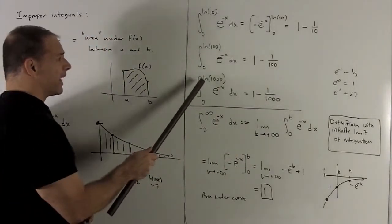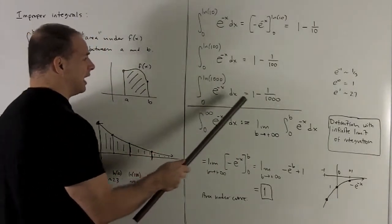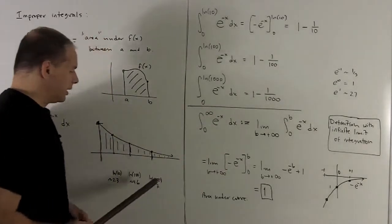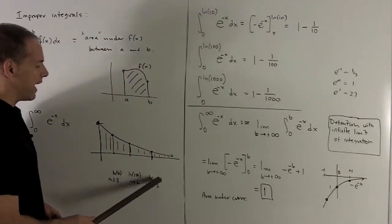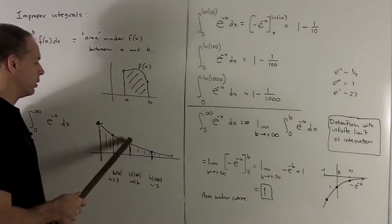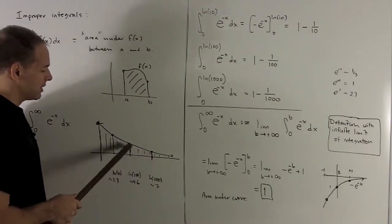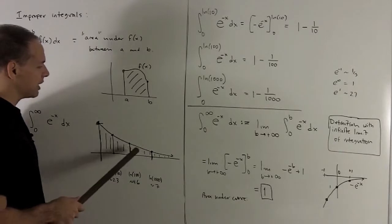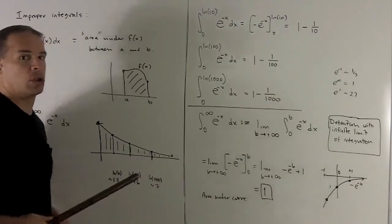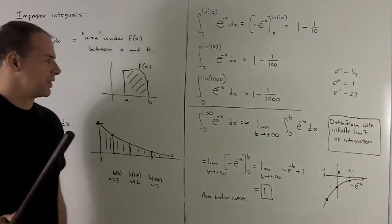If I do ln(1000), same idea: 1 minus 1/1000. Natural log of 1000 is roughly 7, so we're pushing out a bit more. We notice this area, as I keep pushing out, wants to get closer and closer to 1. Let's formalize this.